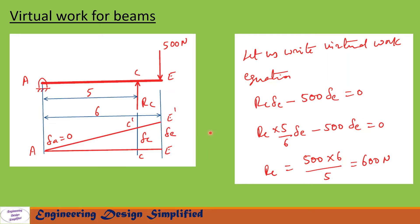Now let us write the virtual work equation. The equation is RC into delta C minus 500 into delta E equals 0. The reaction RC is vertically upwards and delta C is also in the upward direction, hence the plus sign. The 500 N load is acting vertically downwards while displacement is upward, hence the minus sign. From this equation we can write RC equal to 600 N. So the reaction at C, RC equals 600 N.